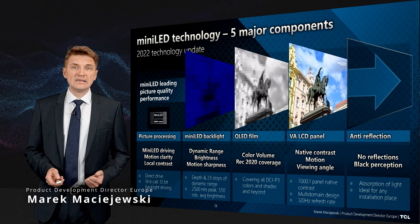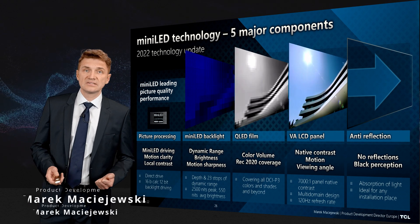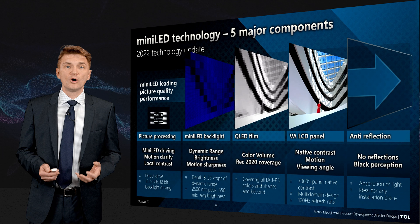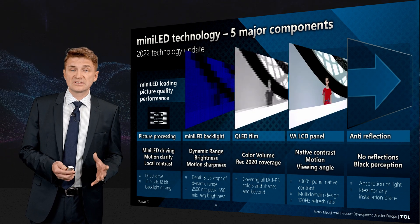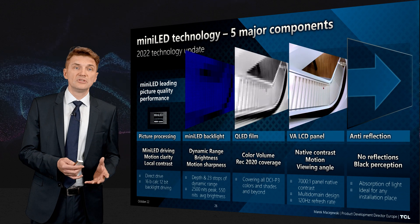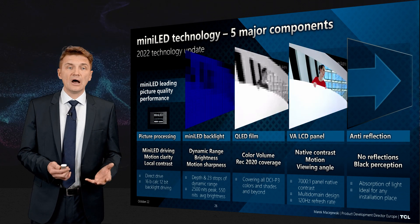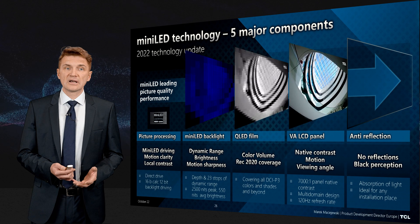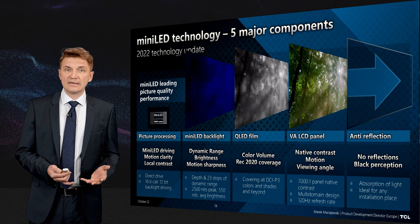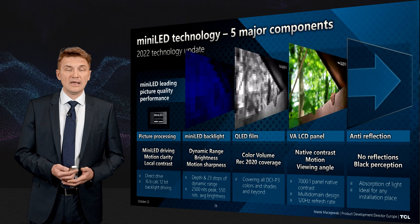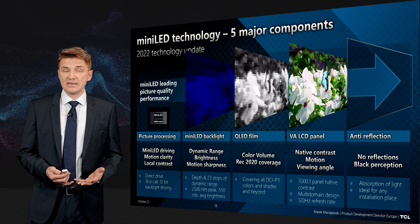So what is mini LED? Mini LED in TCL is a product built on five major components. The first is picture processing — what we do with the content, how we drive the motion, how we manage the contrast, how we manage HDR, and then how we drive the panel.